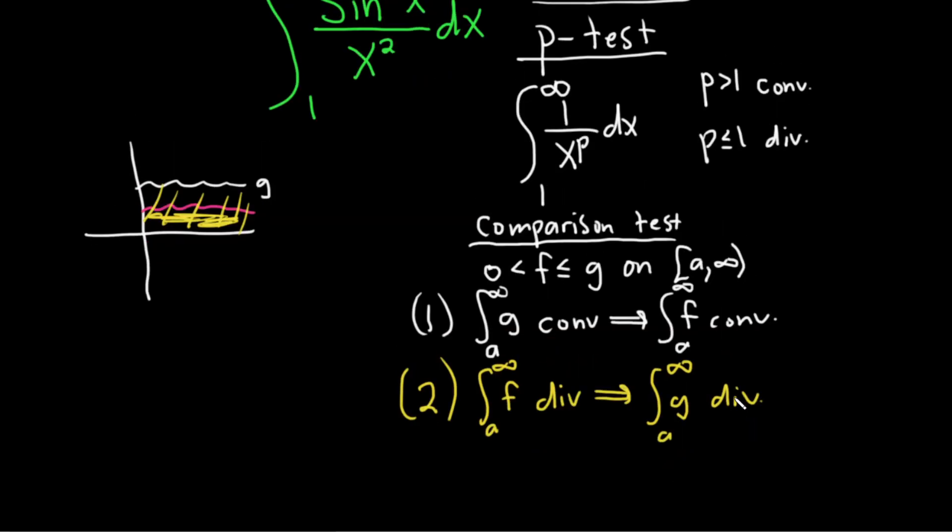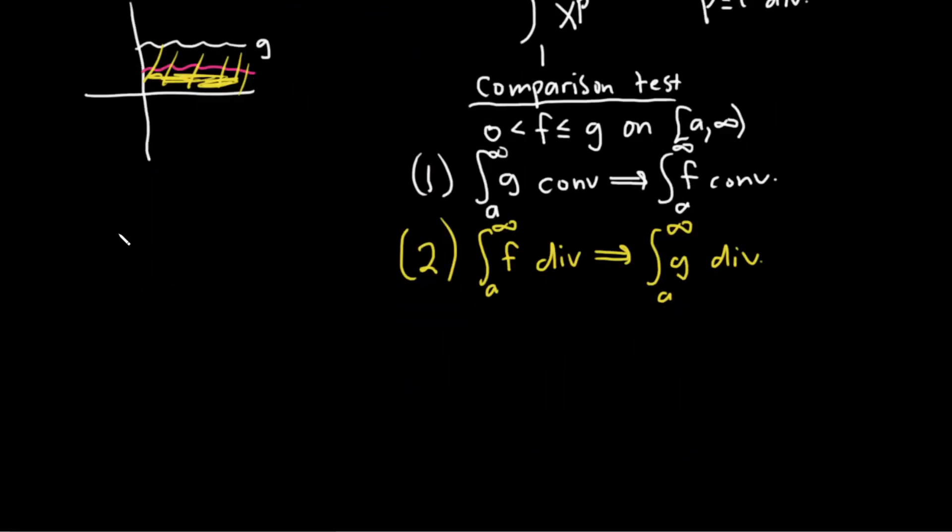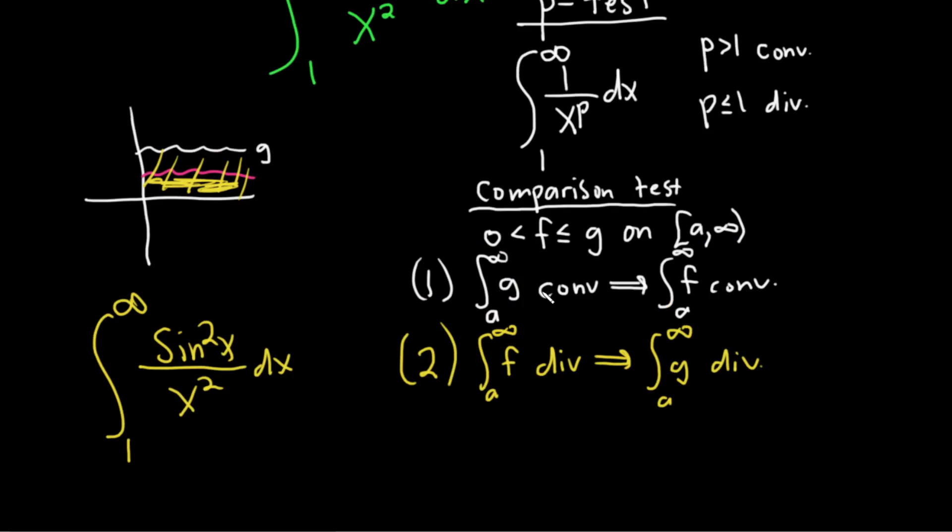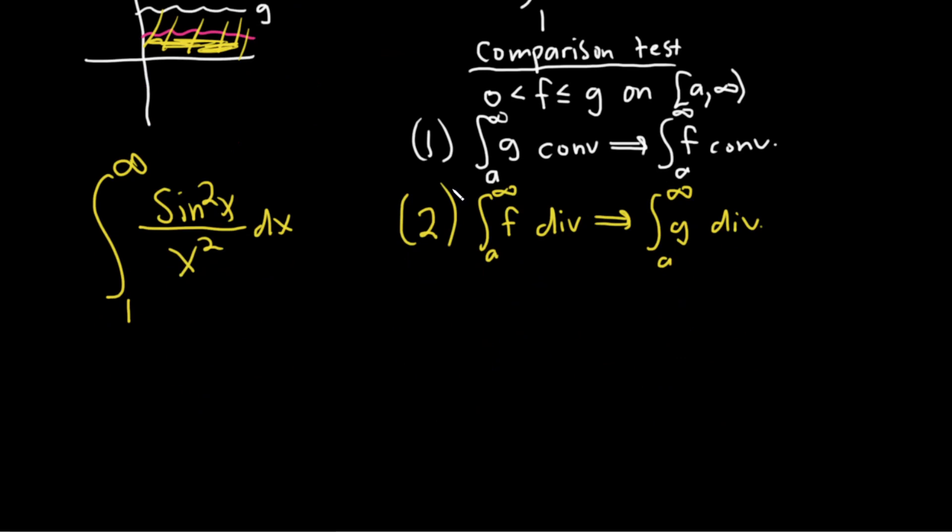Okay, so in this problem, let me just go ahead and write it again down here so we can see it more clearly. So it was from 1 to infinity, sine squared x over x squared dx. I believe that was the problem. Yes, yes, it was.